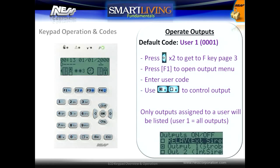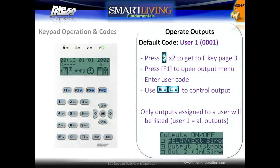To operate outputs, press the right arrow key two times to go to shortcut page 3. Press the F1 key to open the output control menu, enter a user code, and use the check option buttons to control the output. Only outputs assigned to a user will be listed.